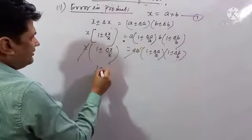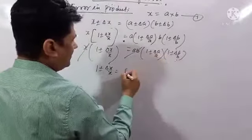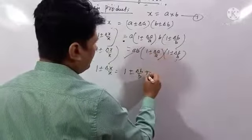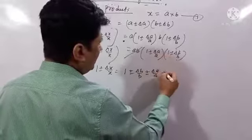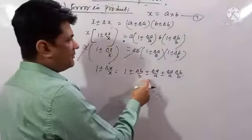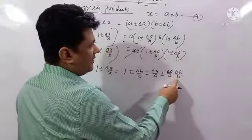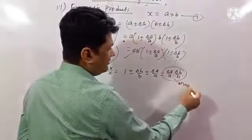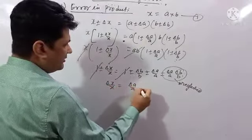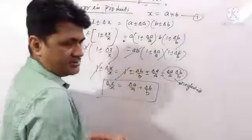Since a times b equals x, we get 1 plus or minus delta x by x equals 1 plus or minus delta a by a plus or minus delta b by b plus (delta a by a times delta b by b). The product of two relative errors is very small and is neglected. After cancelling 1 from both sides: delta x by x equals delta a by a plus delta b by b. The relative error in x equals the sum of the relative errors in a and b.